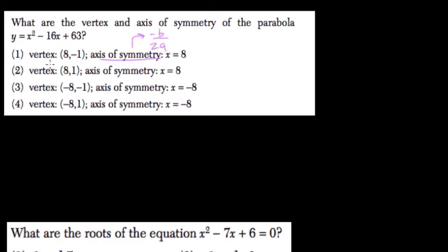So what's our b term here? Our b term is negative 16, so negative b is positive 16, over 2a.